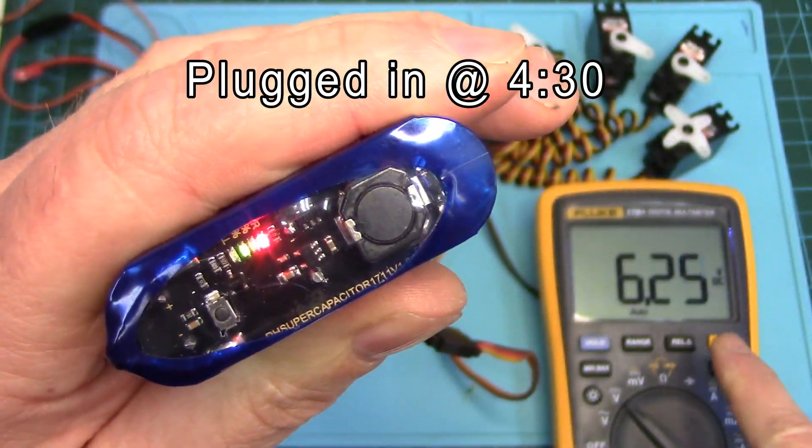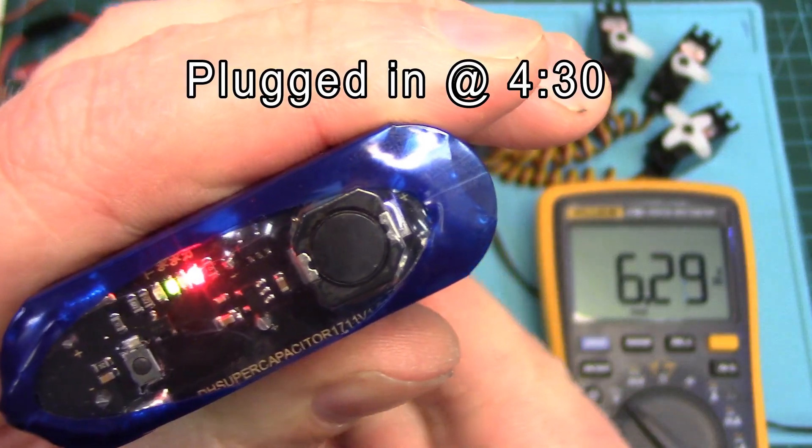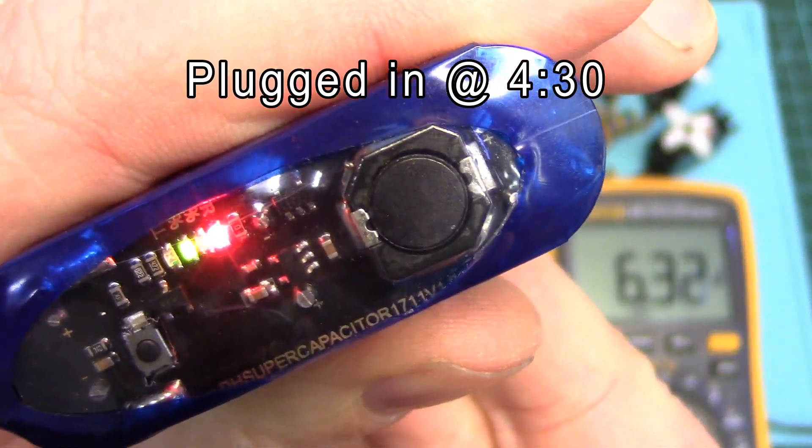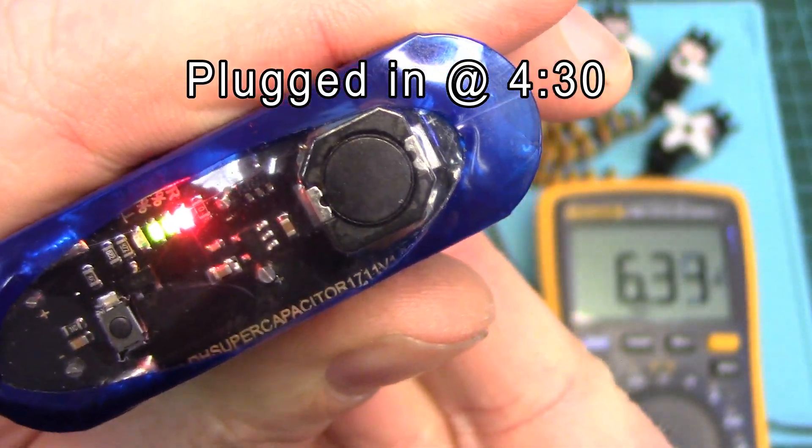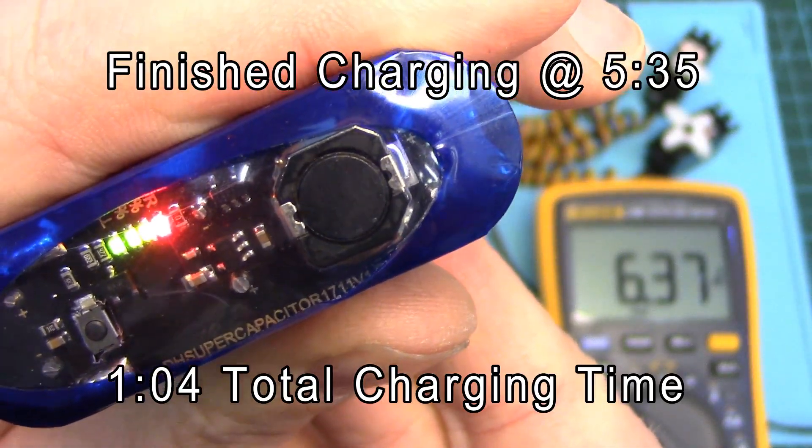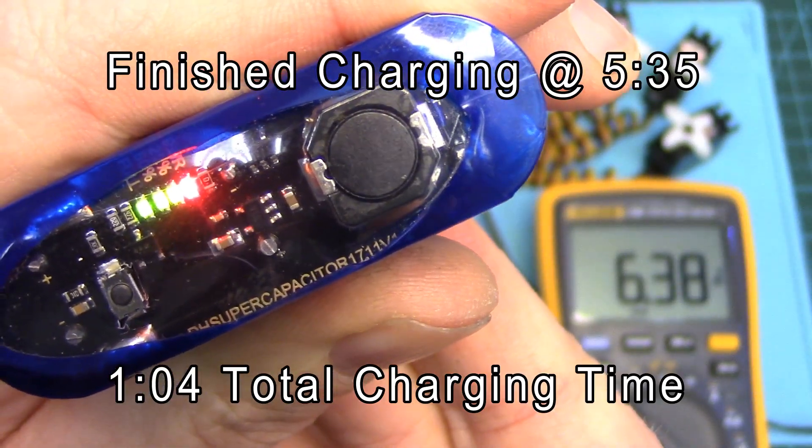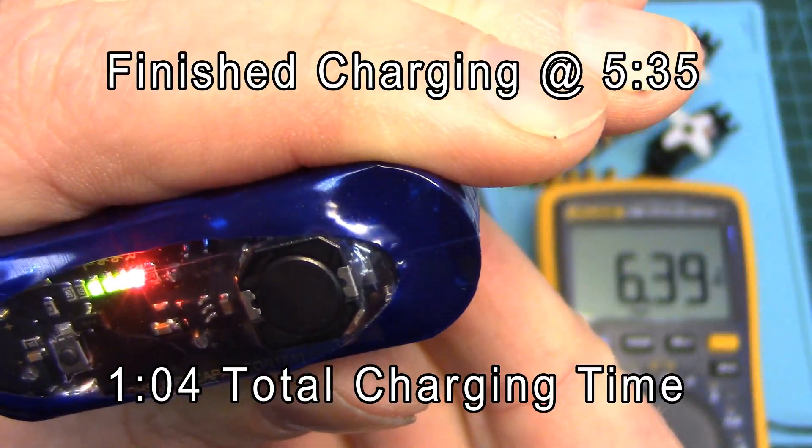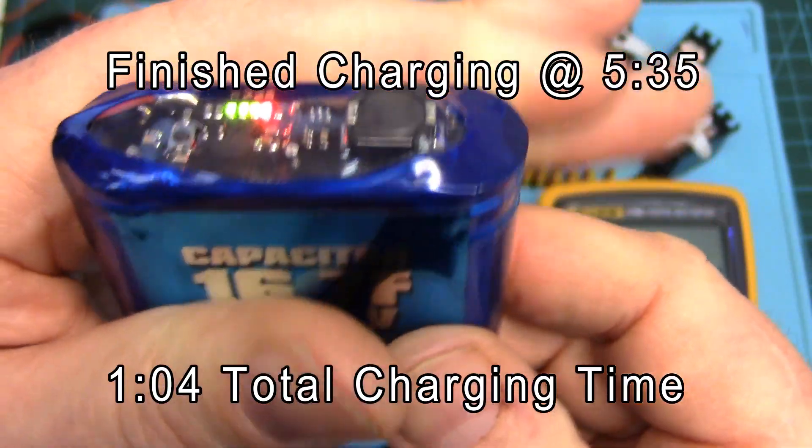You can see the voltage on the meter has dropped a little bit as this thing's charging up, because it's obviously drawing some current as it's charging. And there, it's fully charged now. All three LEDs are lit and it's ready to rock.